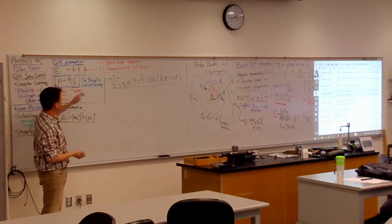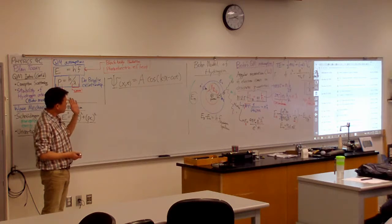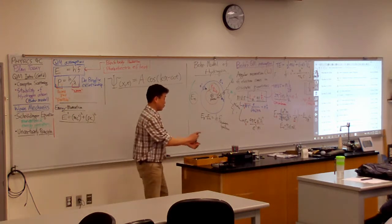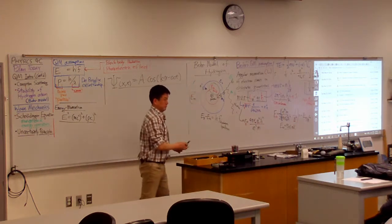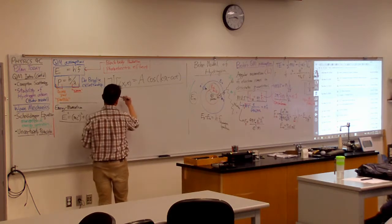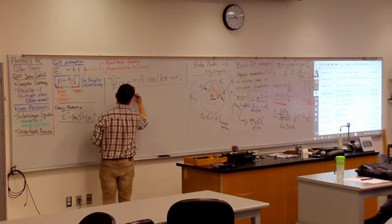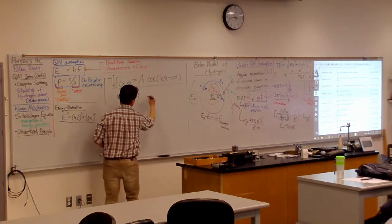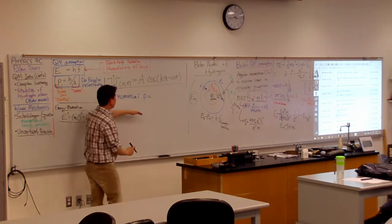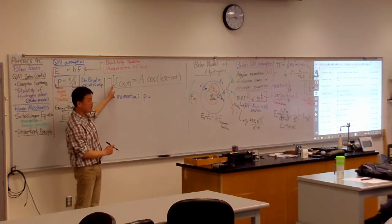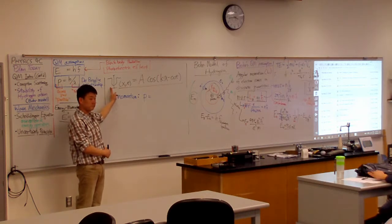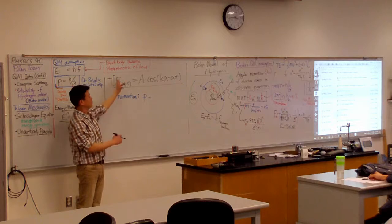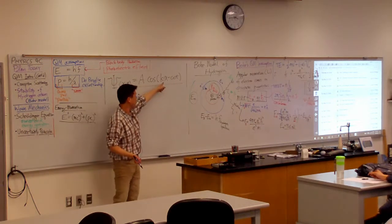So, with these relationships in mind, what would you say is the momentum of this electron? So, momentum of this electron. Could you express that in terms of some of the parameters that already specified this wave function? So, which parameter? K, right? The wave number.